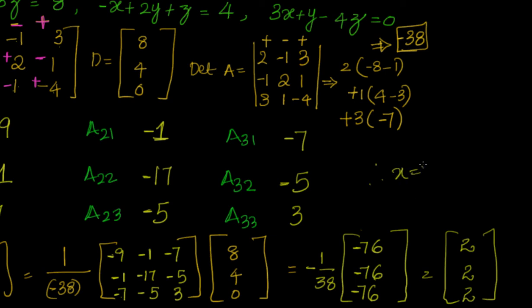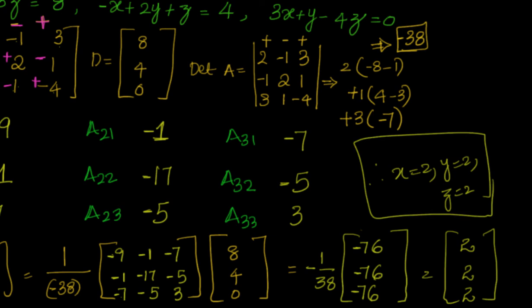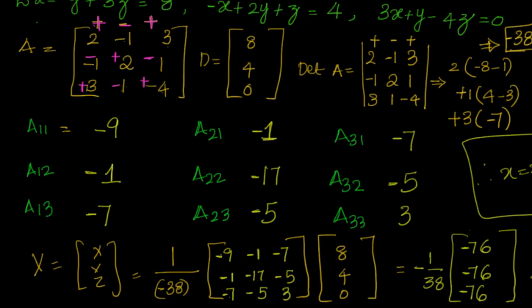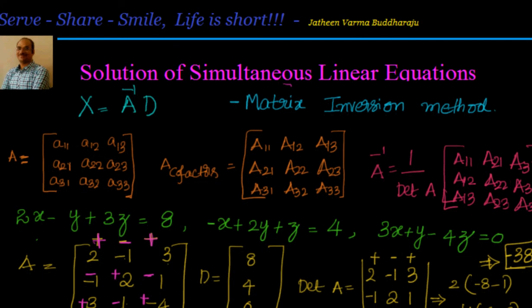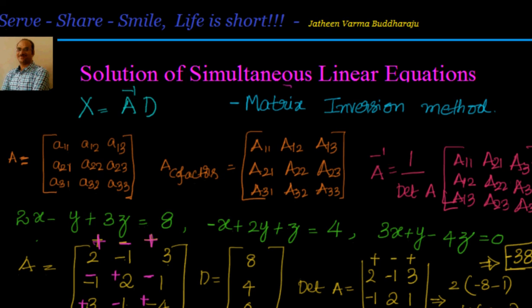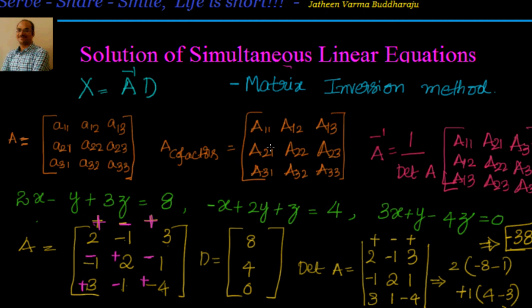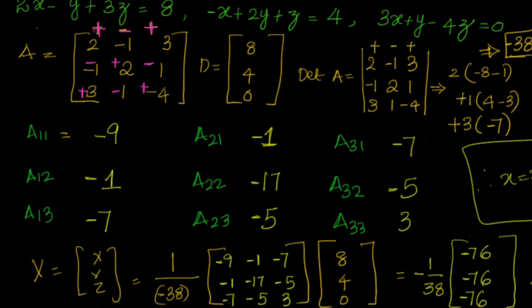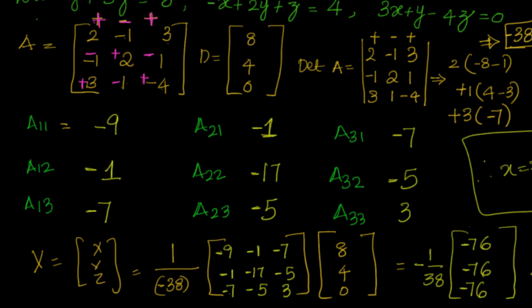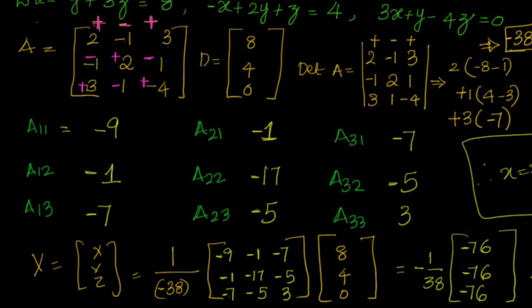So to recap: as part of the matrix inversion method, we compute x = A inverse times D. First we find A inverse — we compute the cofactors, transpose the cofactor matrix to get the adjoint, then divide by the determinant of A, which was minus 38. We then multiply A inverse by D and obtained three values, all equal to 2, giving the unique solution x = 2, y = 2, z = 2.